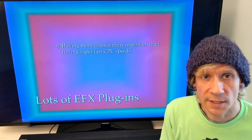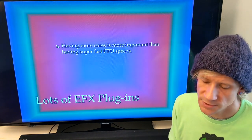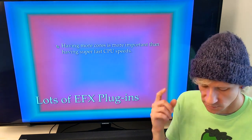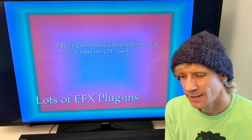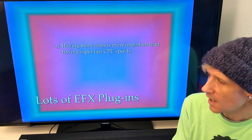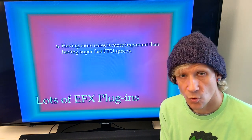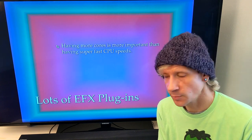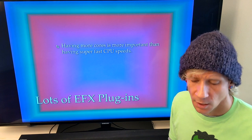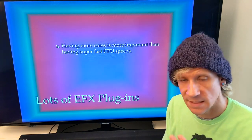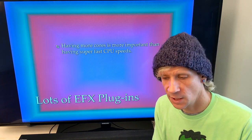If you're the type of person who puts 15 plugins on every track — lots of EQs, compressors, modulations, reverbs — then having more cores is more important than having a single super-fast CPU. Generally speaking, a dual or quad core at 2.3 GHz would be better than a single or dual core at 2.7 GHz, because having multiple cores allows the processing of all those separate plugins to be split out and spread across cores, which a single processor doesn't handle as efficiently.